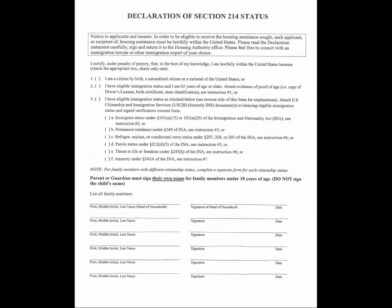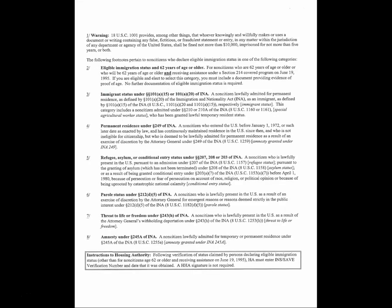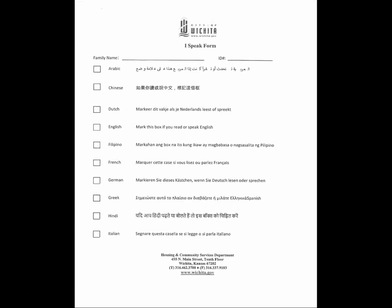The Declaration of Section 214 status — complete for yourself and each family member in the HCV household regarding citizenship status. If more than one status applies to family members, a form for each status will need to be completed for those family members. The I Speak form — check mark the language you speak, then sign and date the back page of this form.